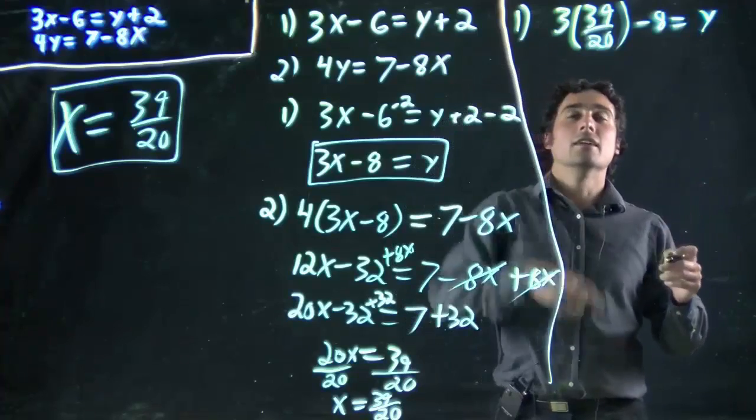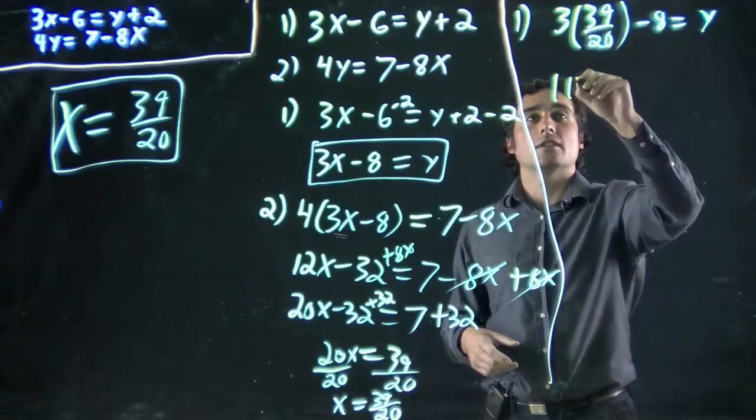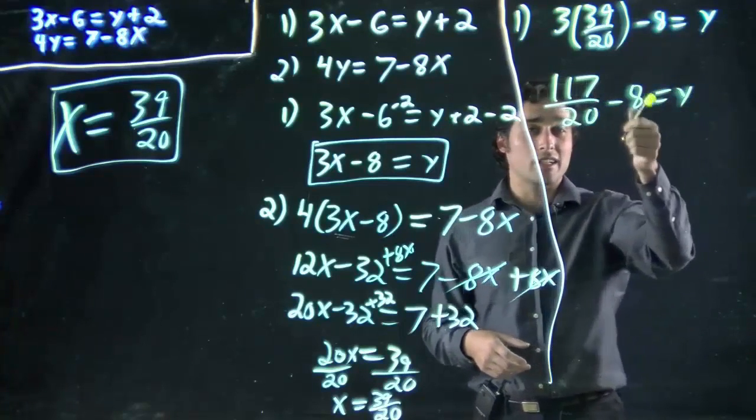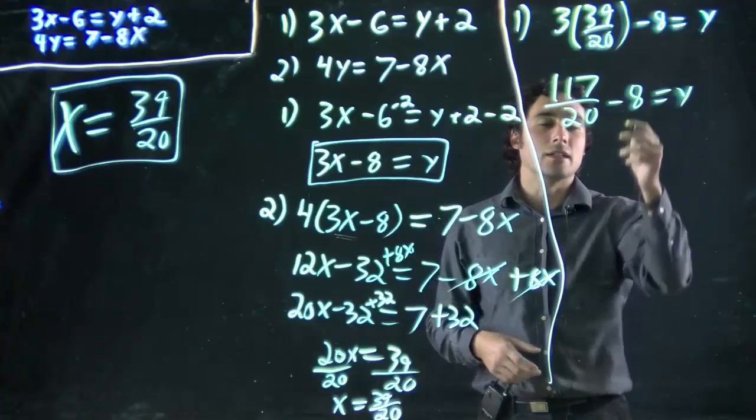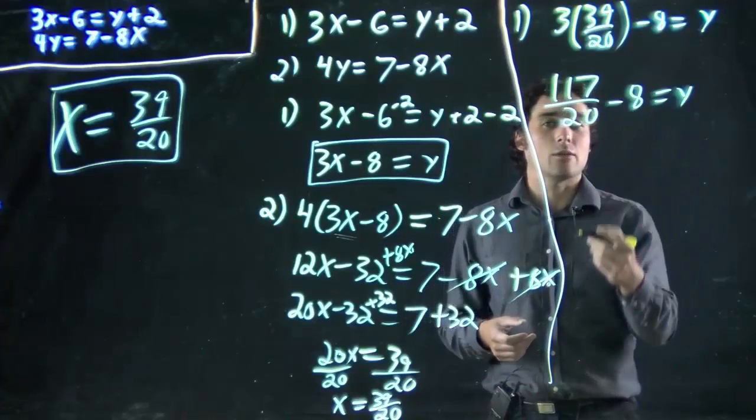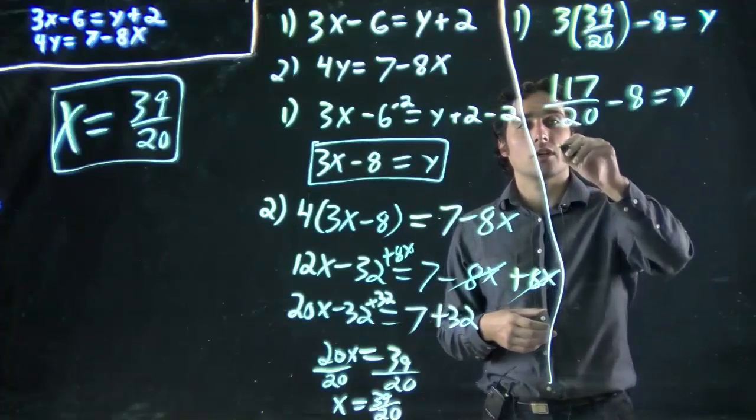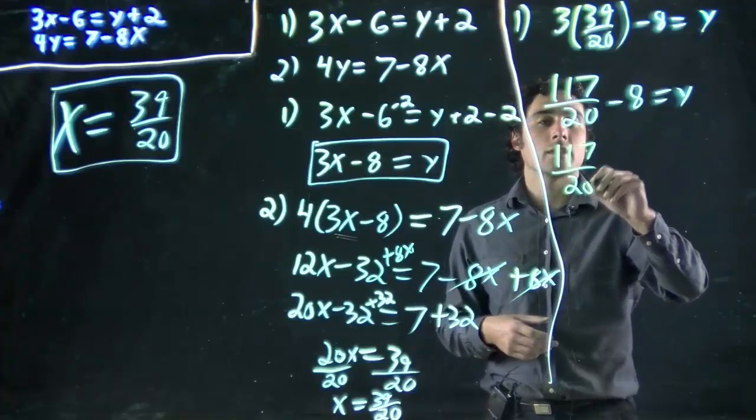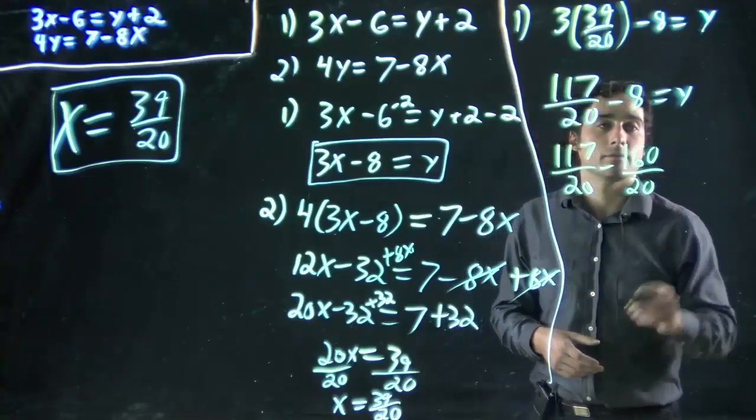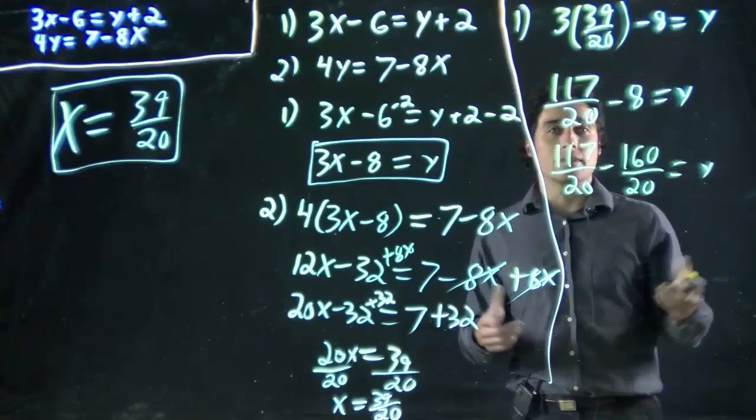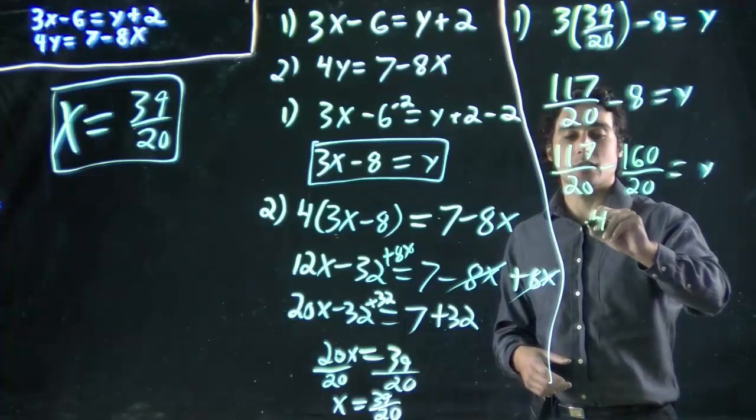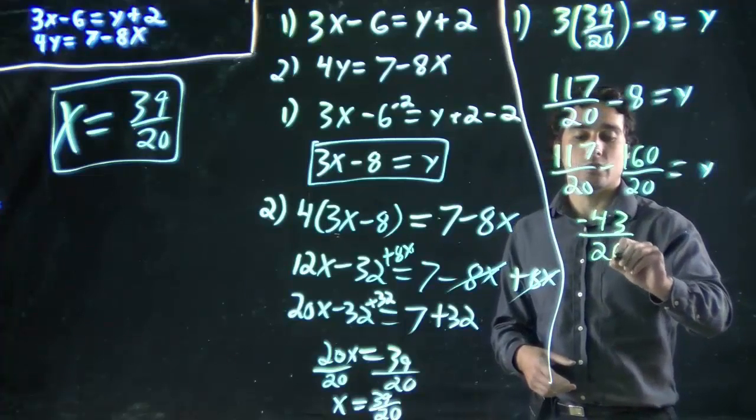We've got 117 over 20 minus 8 equals y. Remember, if I want to combine these, they have to have the same denominator. If I want it to still equal 8, I have to multiply 8 by 20. So 117 over 20 minus 160 divided by 20 equals y. Now they're the same on the bottom, I can combine them. I do 117 minus 160, or in other words, minus 43 over 20 equals y.